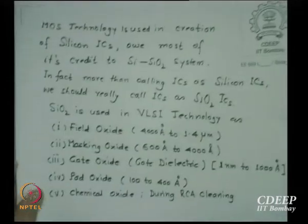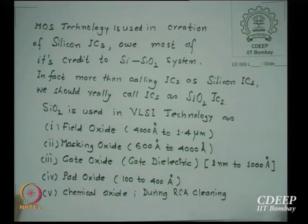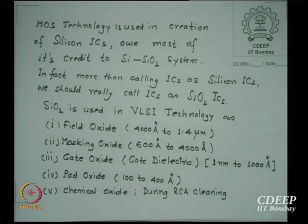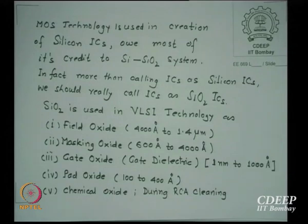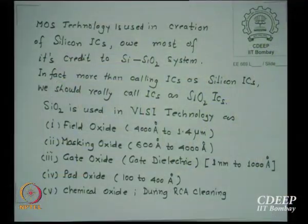If you look at the history of MOS circuits, the technology of MOS used in creation of silicon ICs — most of it is credited to the SiO2 system. In fact, when we started calling them silicon ICs, we should have really called them silicon dioxide ICs. If there would not have been silicon dioxide, pure silicon ICs would not have existed — certainly not MOS, and even bipolar making would have been impossible. That is why SiO2 is the most important material in VLSI.